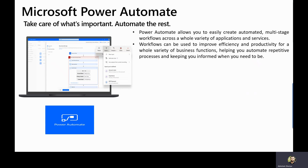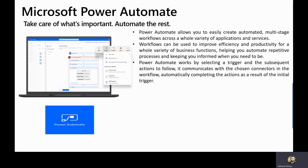Without writing a single line of code or being a hardcore developer, you will still be able to automate the majority of your repetitive tasks that you are currently doing manually. Power Automate works by selecting a trigger and subsequent actions to be followed. It communicates with the chosen connector in the workflow, automatically completing the actions as a result of the initial trigger.